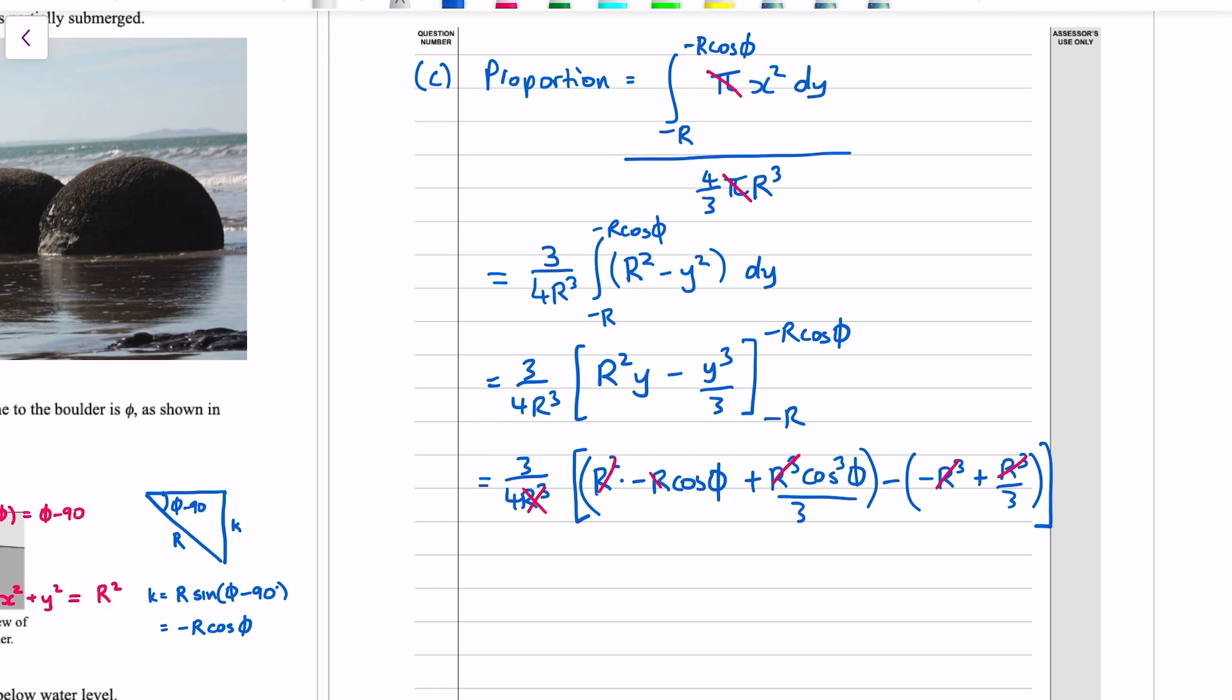And notice that we've got R³ in all the terms. So I can get rid of the R³. And now that proportion doesn't depend on the radius of the boulder, which kind of makes sense because we created, we put R into it. So if the boulder's bigger and that angle's still φ, then we're still good to go. It's not dependent on R. (3/4) times [-cos(φ) + cos³(φ)/3 + 1 - 1/3]. And we could, if you wanted to factor out the threes. So we end up with (1/4)[cos³(φ) - 3cos(φ) + 2].